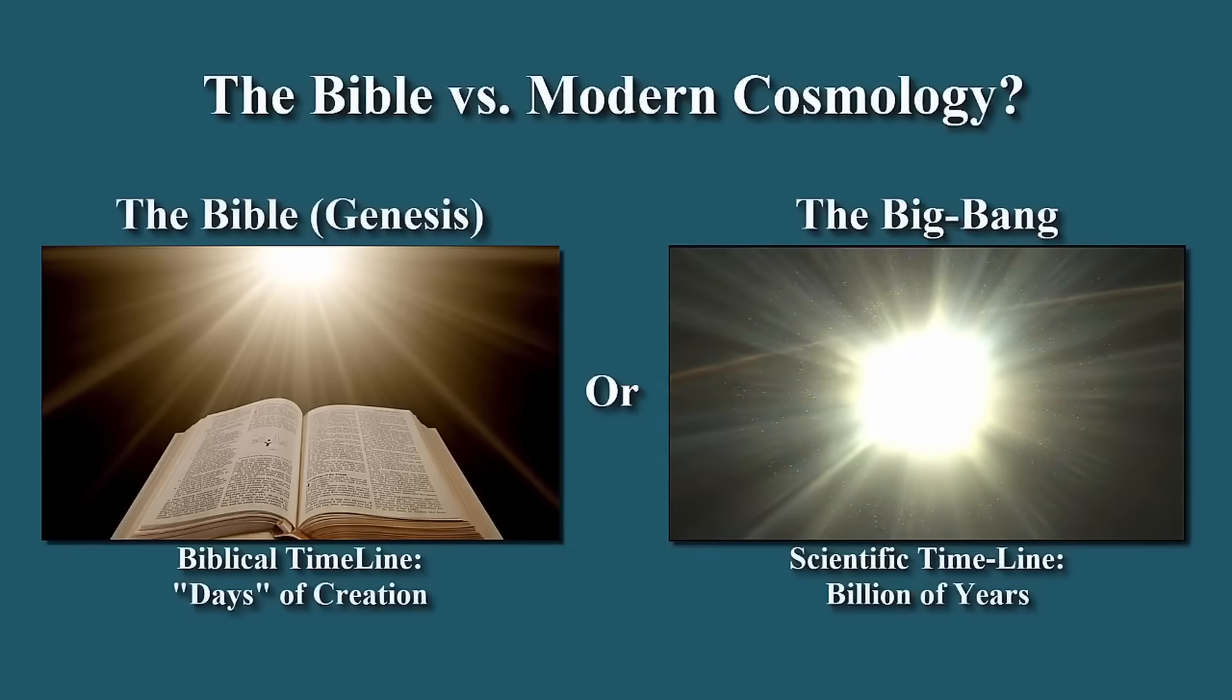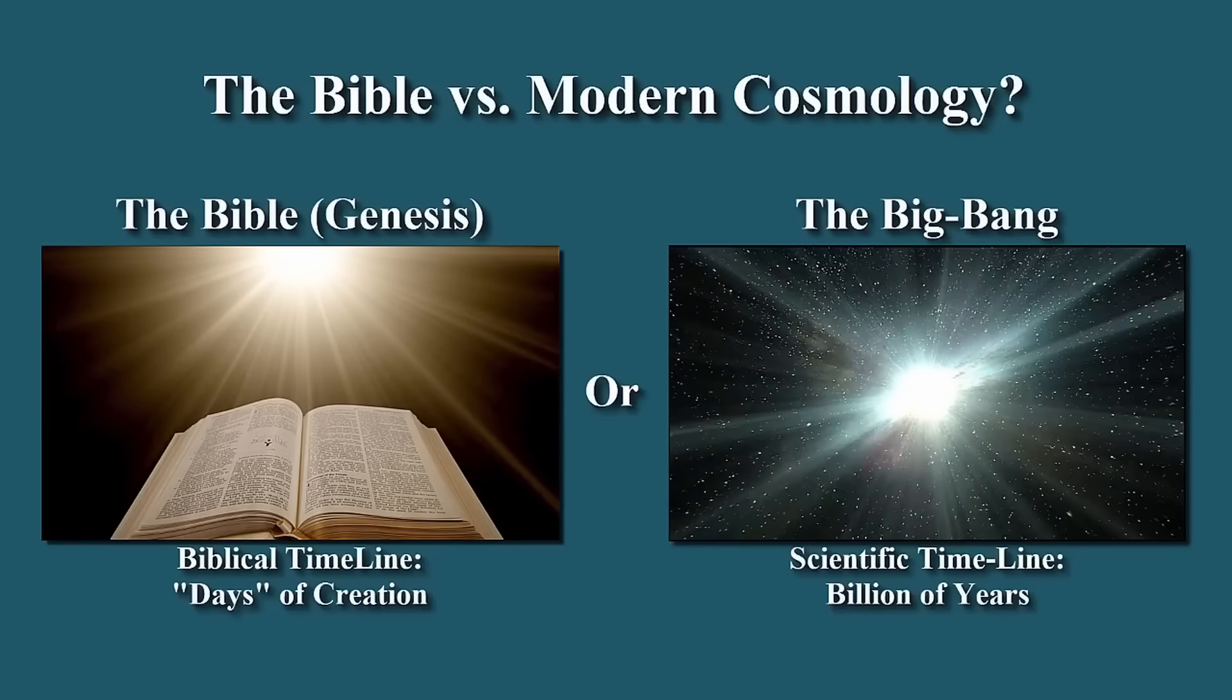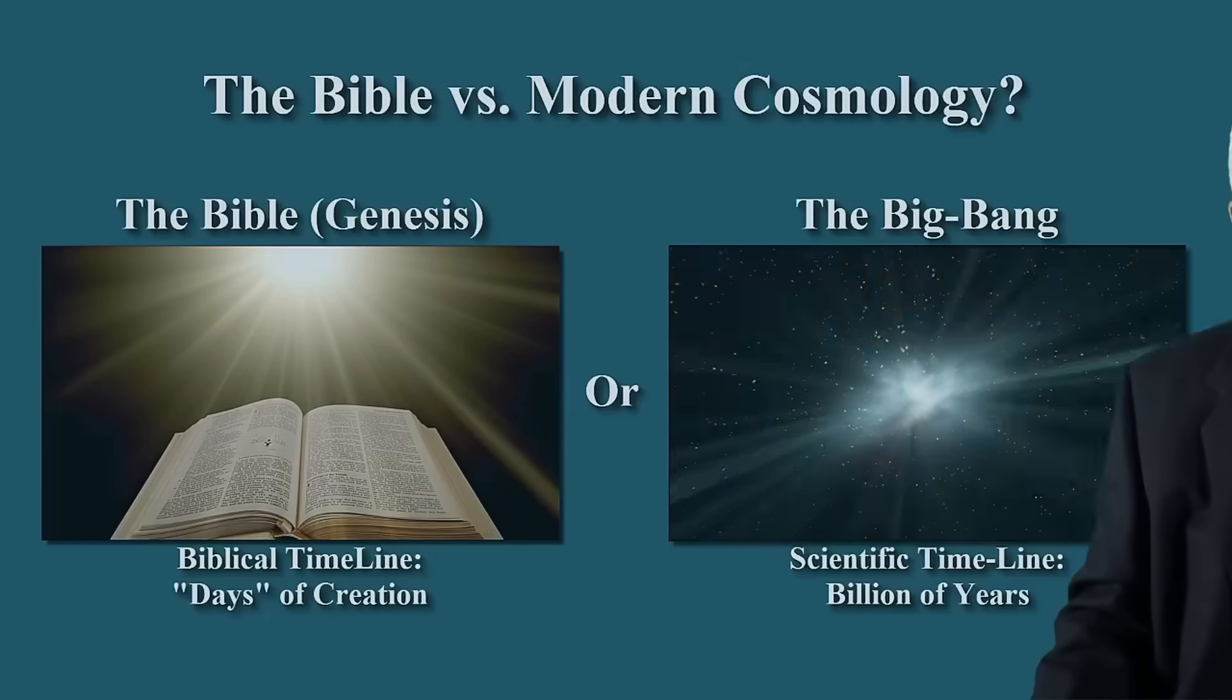Is Genesis creation story compatible with the scientific-cosmological timeline as measured in billions of years? How can one respond to this question debated since the very beginning of modern science?